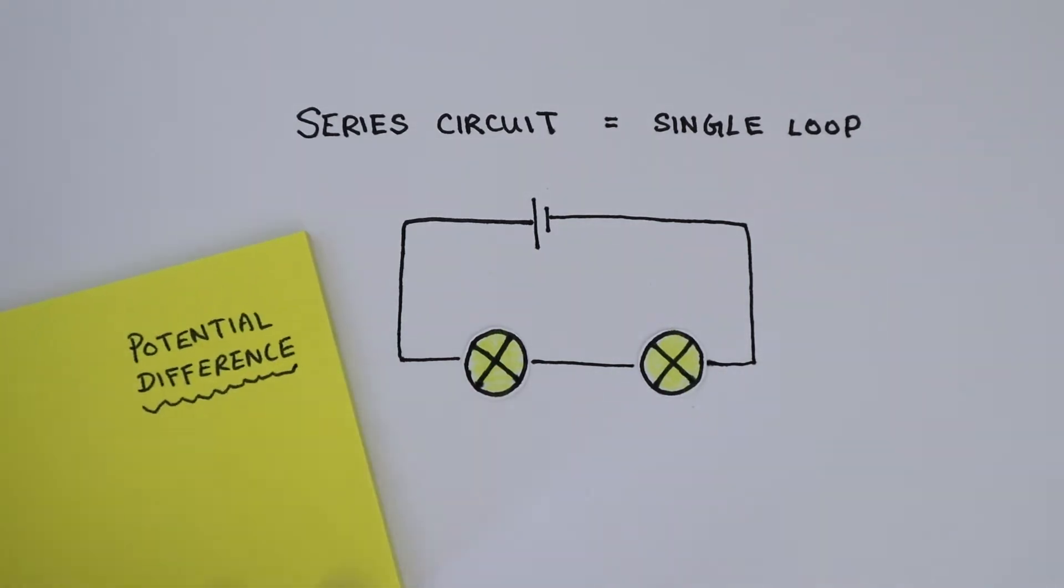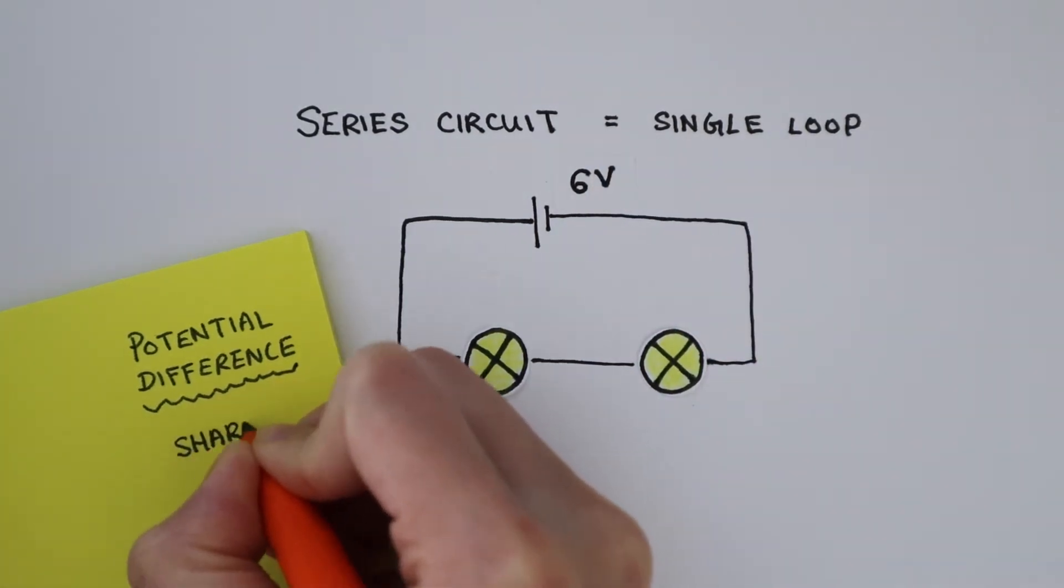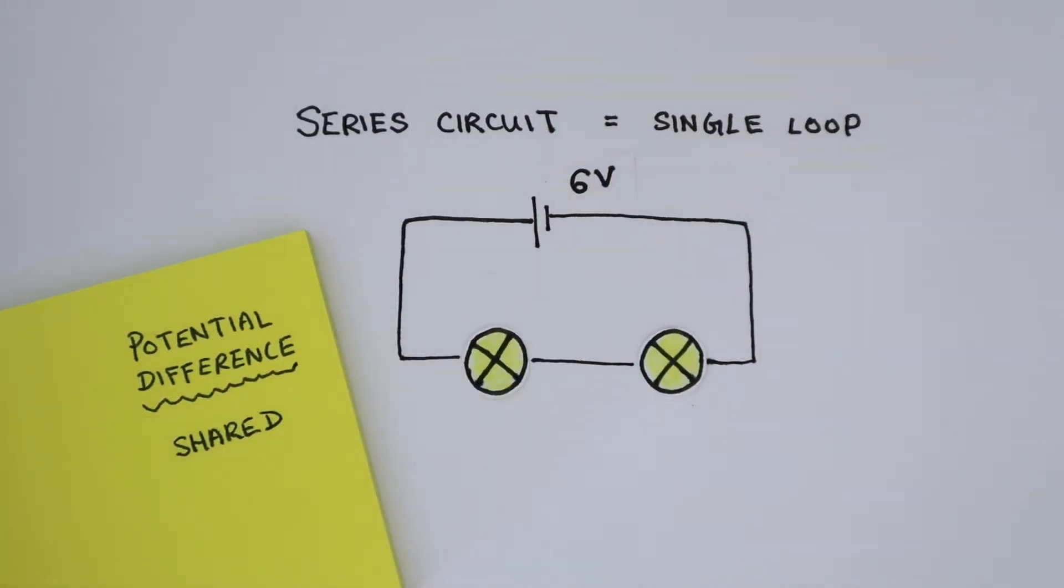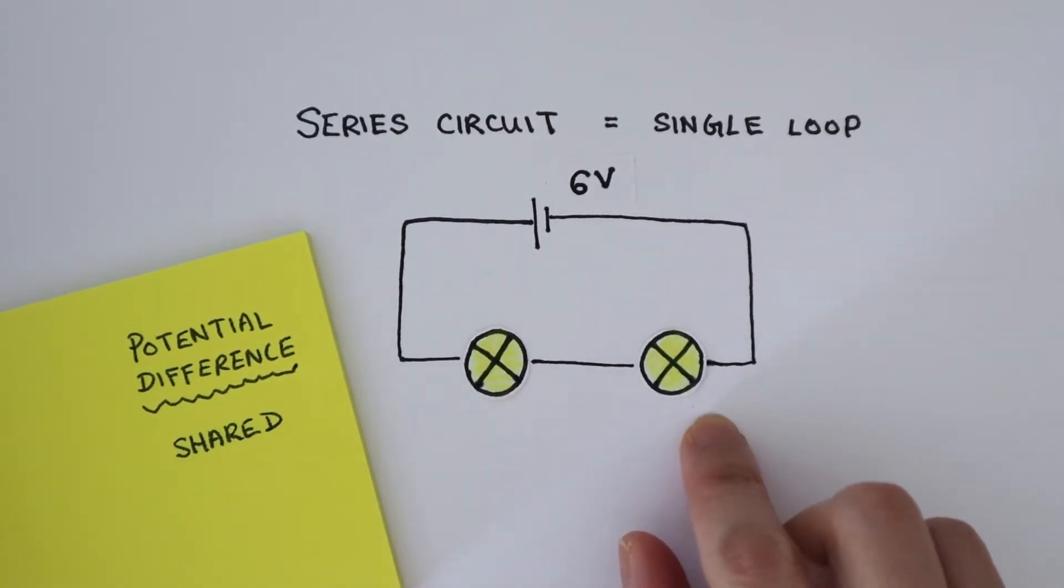The potential difference is supplied by the cell. If this is a 6 volt cell, the 6 volts is shared between the two bulbs. Since these are identical bulbs, each bulb has 3 volts across it.